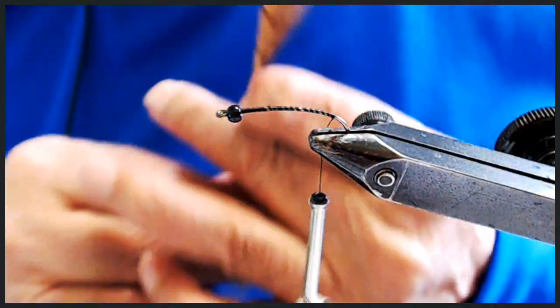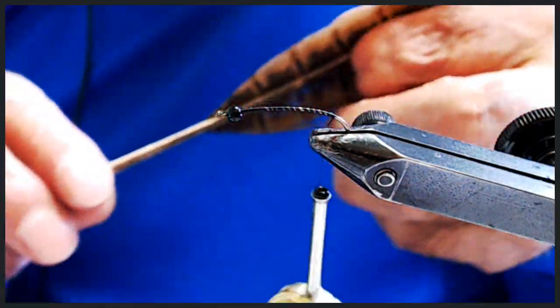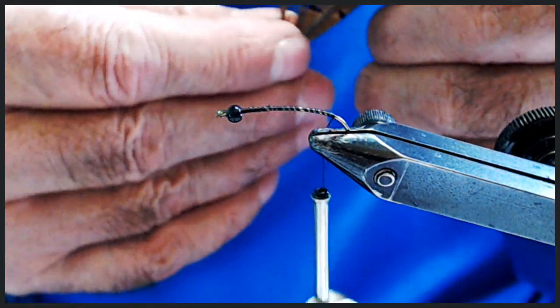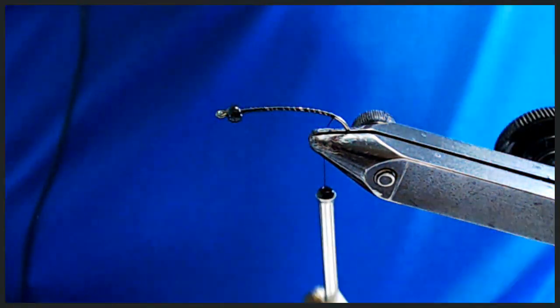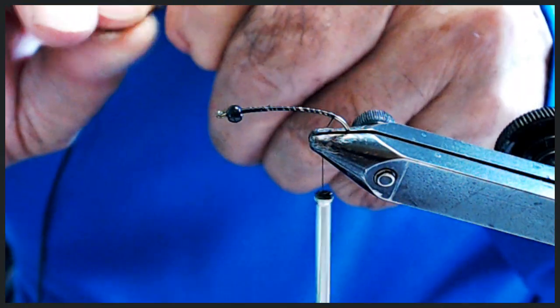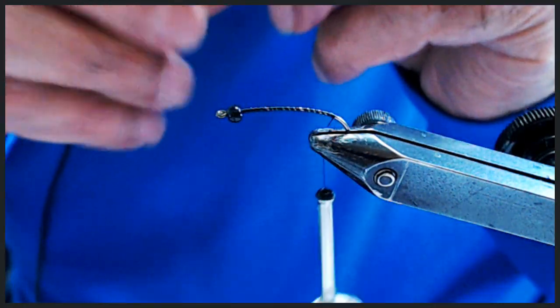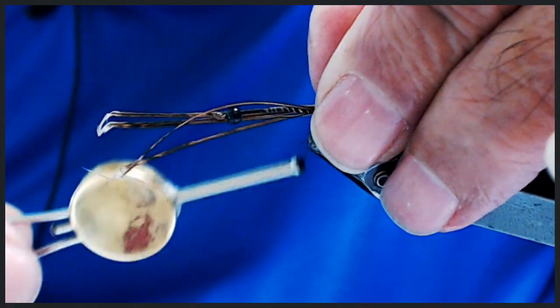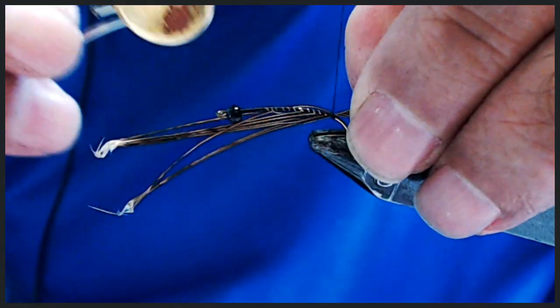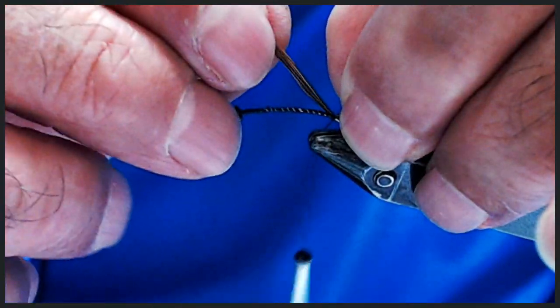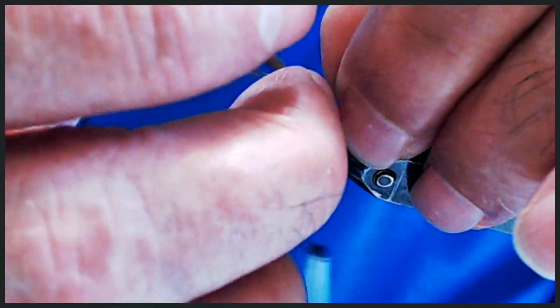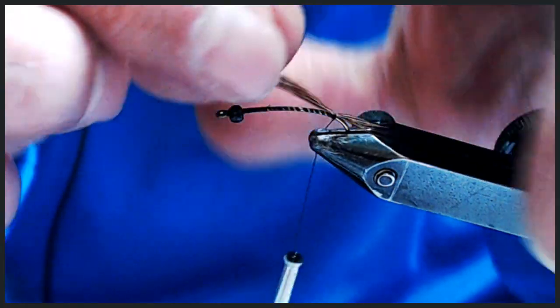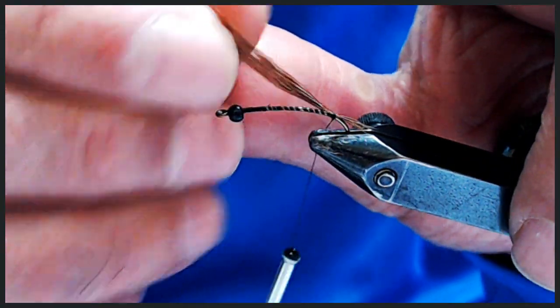For the tail I'm going to use pheasant. It's going to be a short tail but I've got five or six strands. It's not a long tail. I'll show you. I'm just going to pull for length.